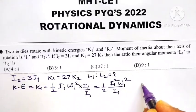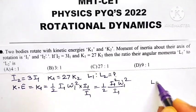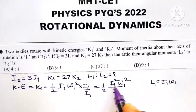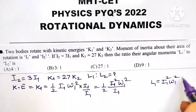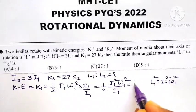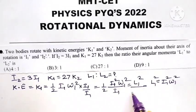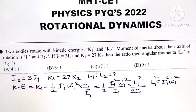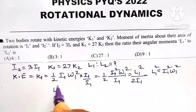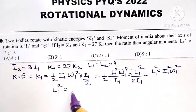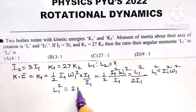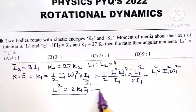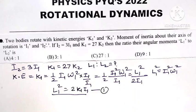But we know L1 equals I1 omega 1. So I1 square omega 1 square equals L1 square. This becomes L1 square divided by 2I1, or L1 square equals, let us cross multiply it, 2K1 into I1. This is equation number 1.